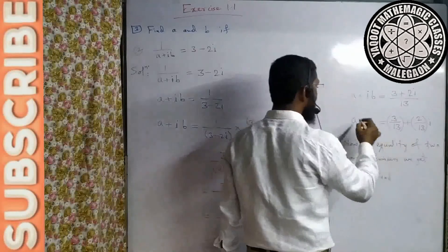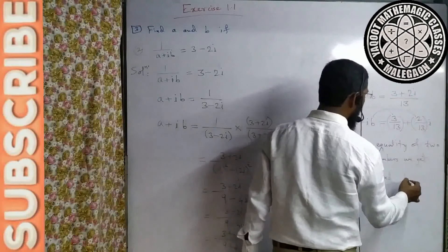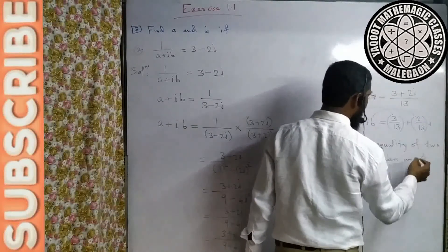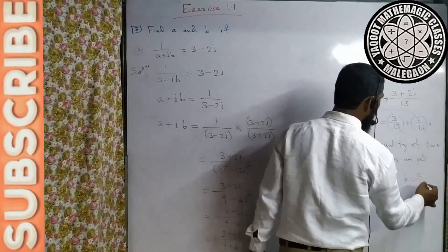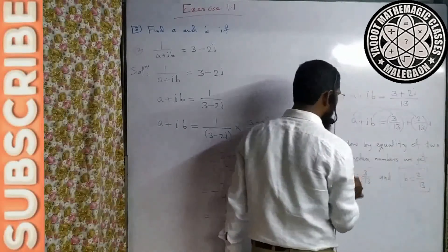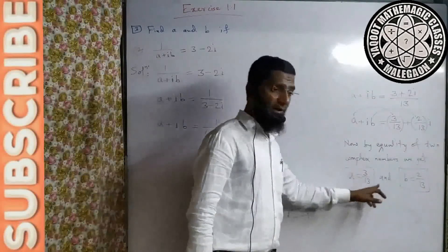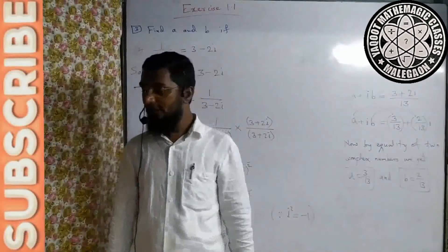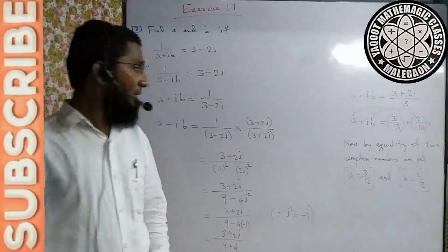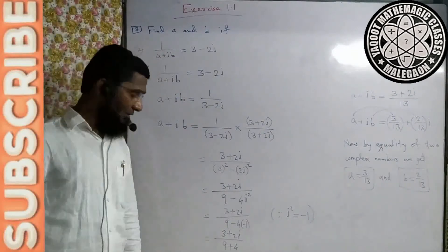Imaginary part se b ki value milegi — b = 2/13. So a ki value 3/13 aur b ki value 2/13 mili. Toh a = 3/13 aur b = 2/13. Bahut simple hai, aap aasani se ise solve kar sakte hain.